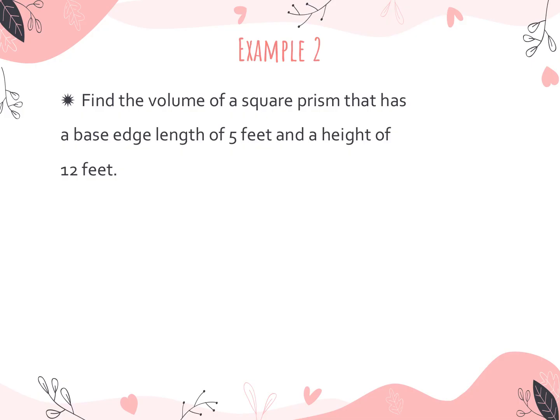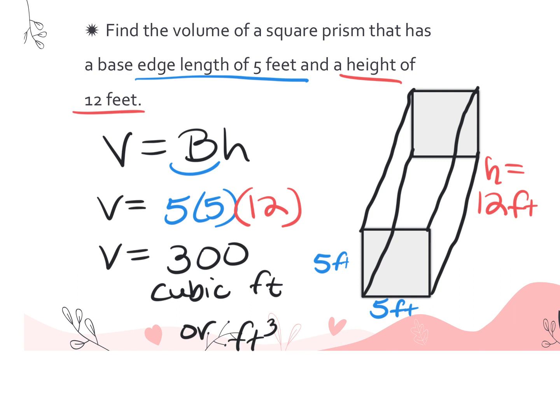The next problem says: find the volume of a square prism that has a base edge length of 5 feet and a height of 12 feet. No picture was provided — on the test you may get questions like this. If it helps to draw a picture, by all means do that. The formula is capital B times H. My base shape is a square, so 5 times 5, then multiply by the height 12, and I get 300 cubic feet.